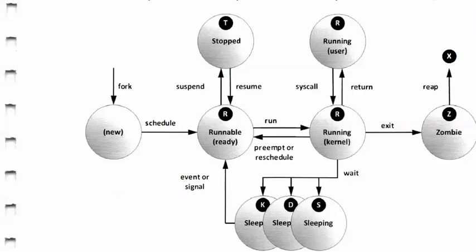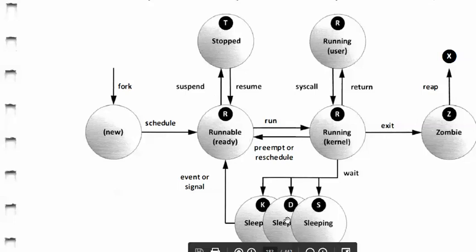There are various process states: a process is new, it is forked, it is done, scheduling is done, the process is runnable, the process can be stopped, it can be suspended, can be resumed, and the process is running. A process can also be sleeping or waiting. These are the various process states.